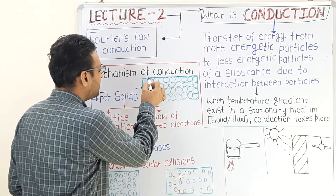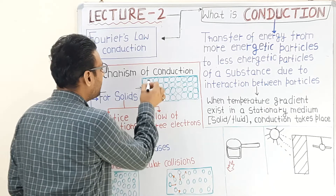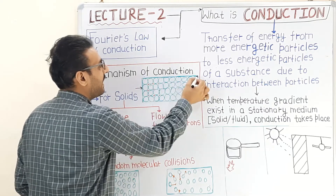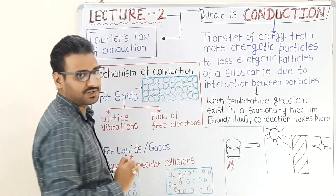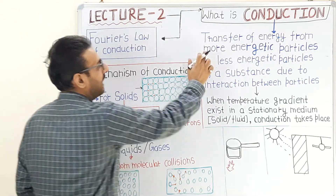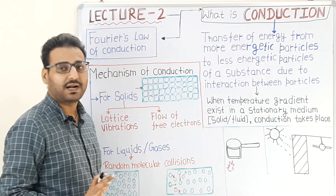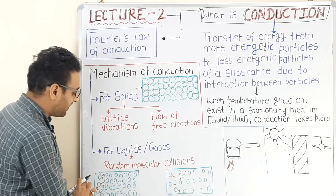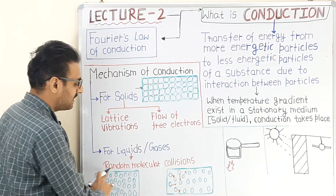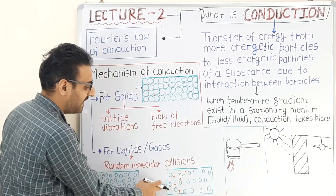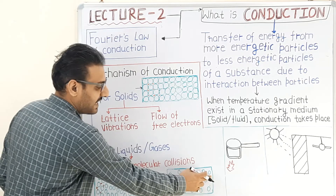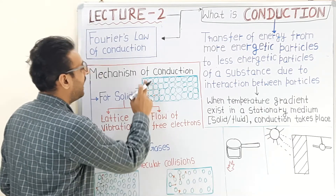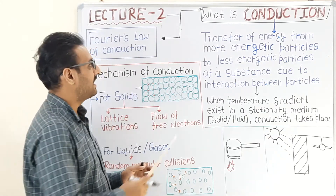The energy of the particles at the heated part becomes greater — those particles are more energetic at high temperature — while particles at the other end are less energetic at low temperature. Heat transfers from more energetic particles to less energetic particles. The same applies for liquids and gases: there is a temperature gradient from the heated end to the cooler end.